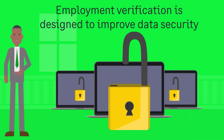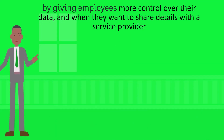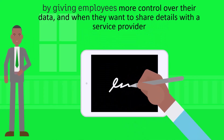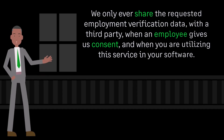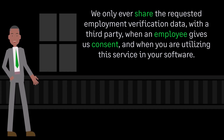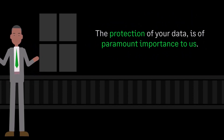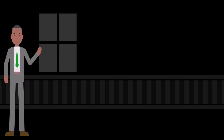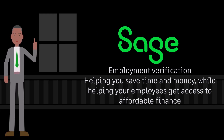Employment Verification is designed to improve data security by giving employees more control over their data and when they want to share details with a service provider. We only ever share the requested Employment Verification data with a third party when an employee gives us consent and when you are utilizing this service in your software. The protection of your data is of paramount importance to us. Sage Employment Verification, helping you save time and money, while helping your employees get access to affordable finance.